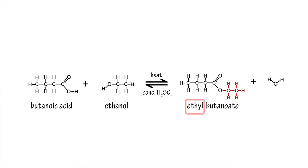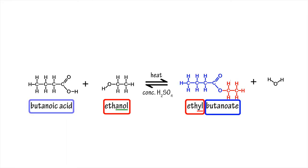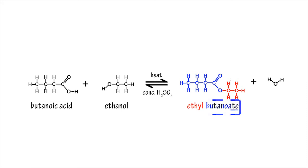The first part of the name of the ester derives from the name of the alkanol, by replacing the '-anol' ending with '-yl', and the second part from the name of the carboxylic acid, by replacing the '-oic acid' ending with '-oate'. So ethanol becomes ethyl and butanoic acid becomes butanoate.